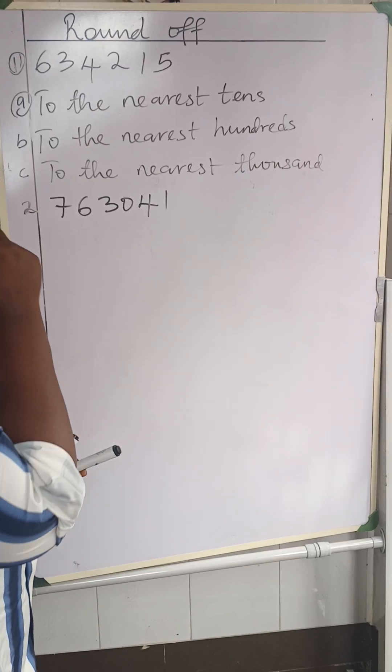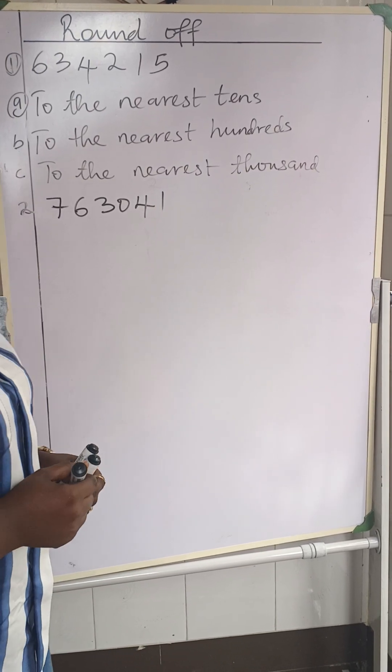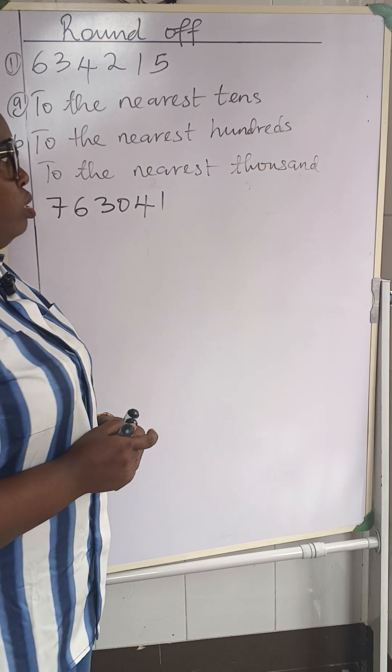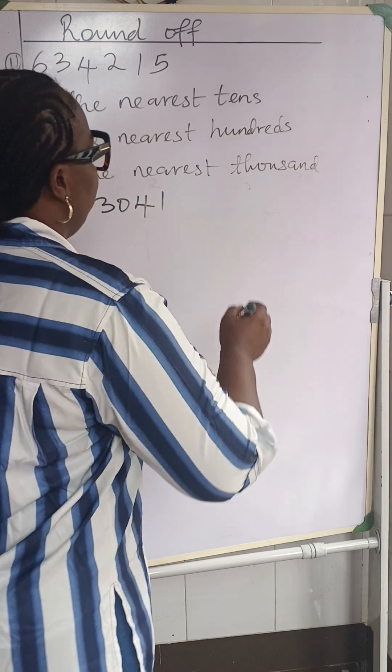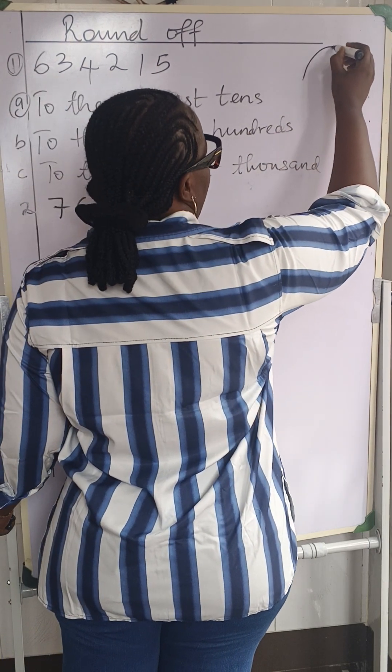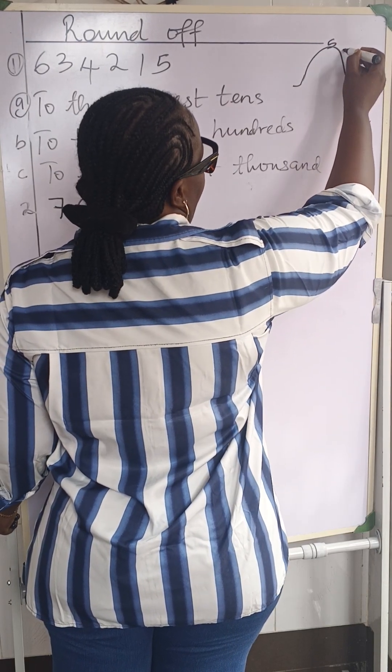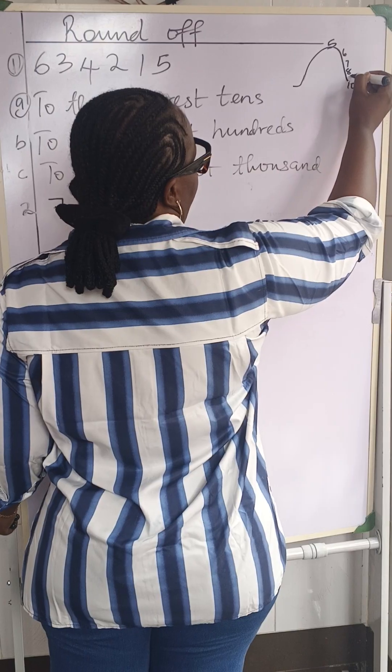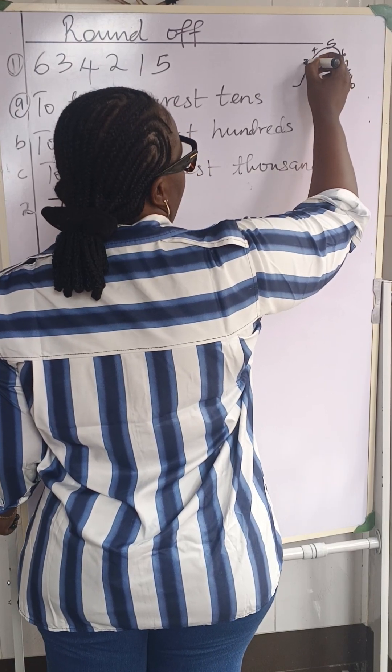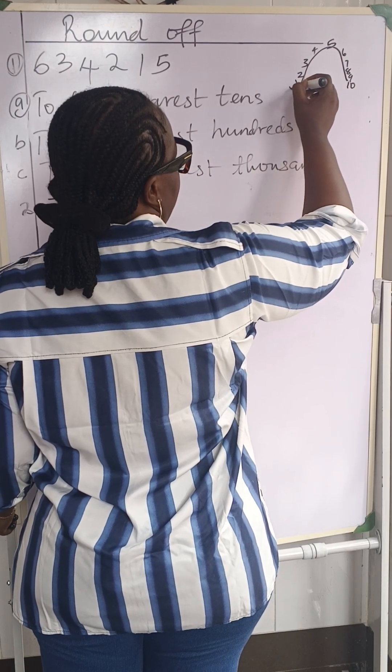We are using 634,215, right? So now, I know we have done something on rounding before where I use the hill. If you're to round off, let's put this here to guide us. This is 5 up, and this is 10 here. We'll have 6, 7, 8, and 9. And this is 4, 3, 2, 1, and 0 is here.